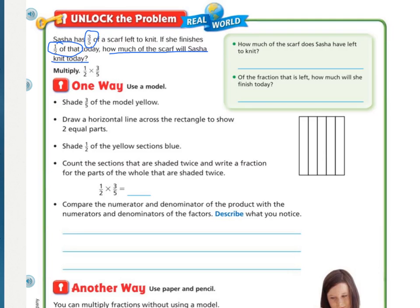You should have underlined how much of the scarf will Sasha knit today, circled three-fifths, and then also circled one-half. I included the words of that so that we realized it was one-half of three-fifths. Look right over here in the green box and press pause and answer those questions.